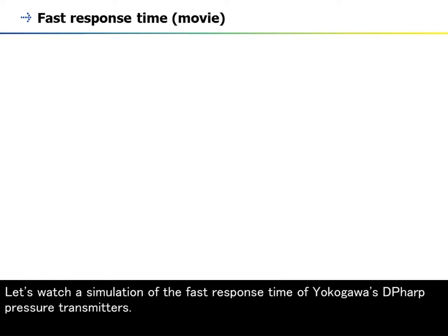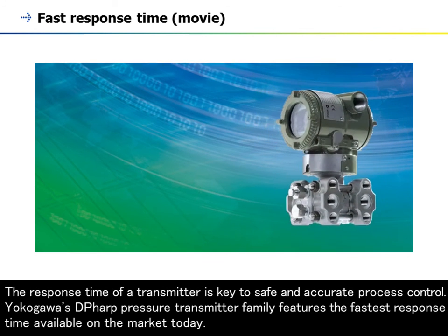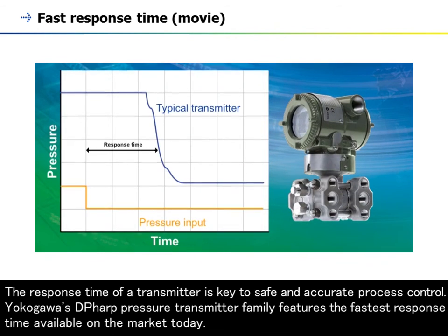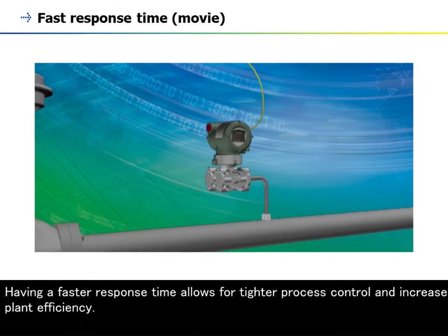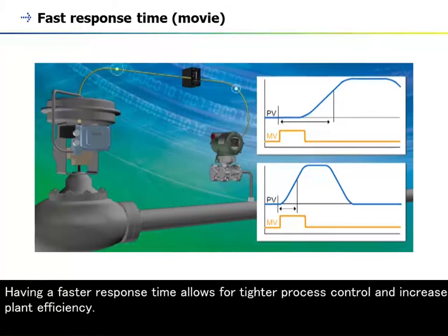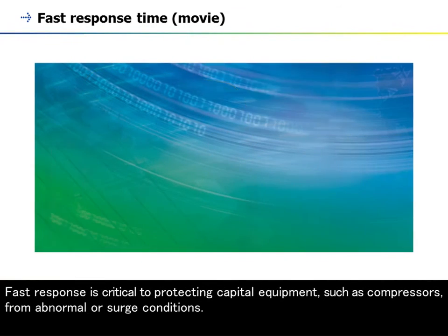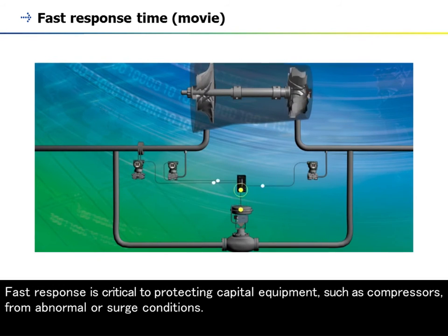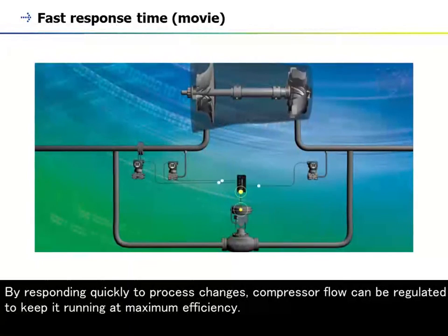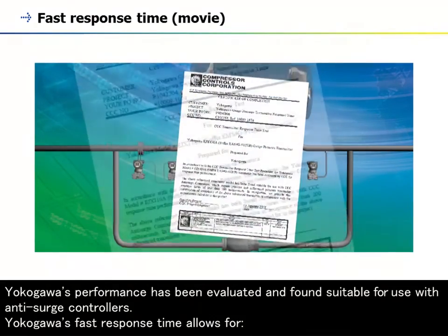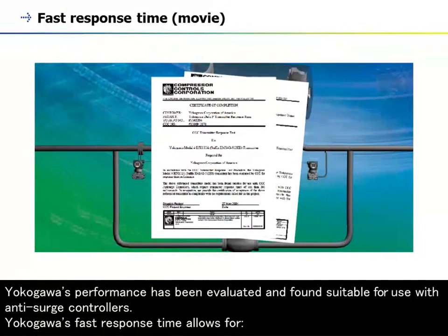Let's watch a simulation of the fast response time of Yokogawa's DP-HARP pressure transmitters. The response time of a transmitter is key to safe and accurate process control. Yokogawa's DP-HARP pressure transmitter family features the fastest response time available on the market today, allowing for tighter process control and increased plant efficiency. Fast response is critical to protecting capital equipment such as compressors from abnormal or surge conditions. By responding quickly to process changes, compressor flow can be regulated to keep it running at maximum efficiency. Yokogawa's performance has been evaluated and found suitable for use with anti-surge controllers.